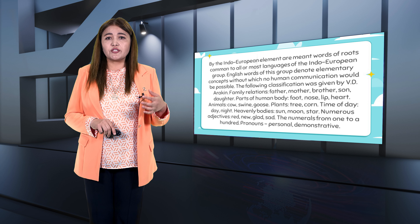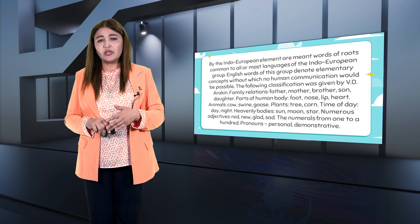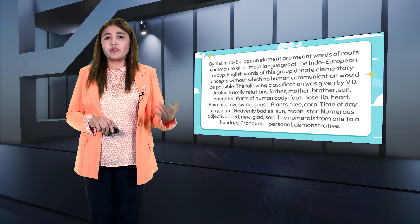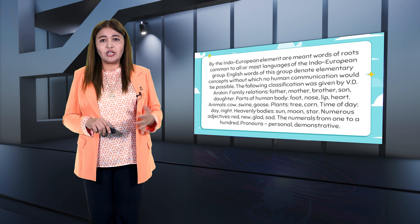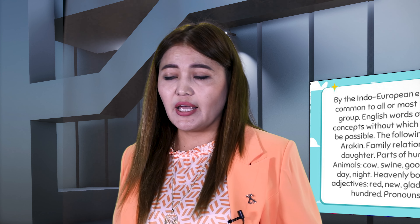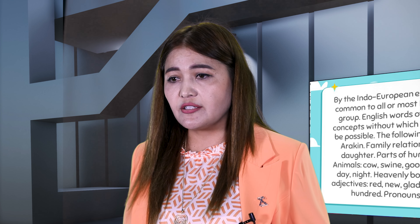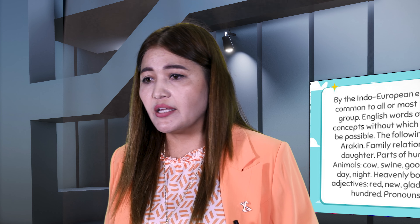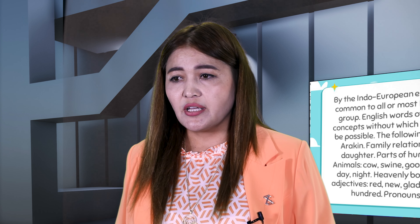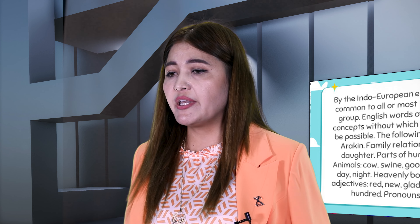According to the classification given by Arakin, Indo-European words include family relations — father, mother, brother, son, daughter — parts of the human body — foot, nose, lip, heart, tongue — animals — cow, goose — plants — tree and corn — times of day — day and night — adjectives — red, new, glad, sad — and personal and demonstrative pronouns, and many others.